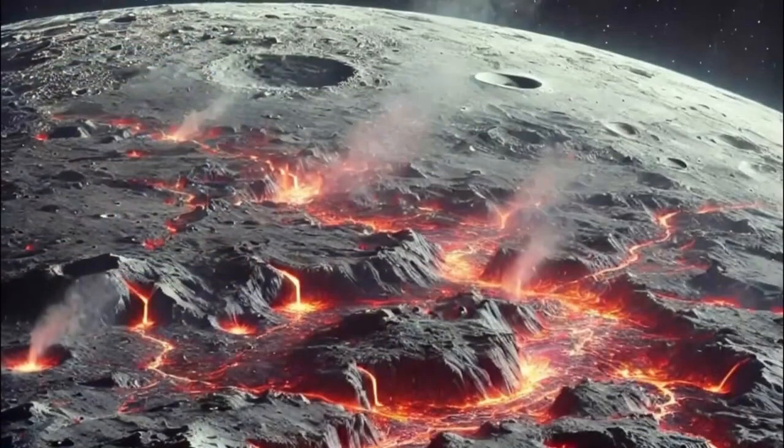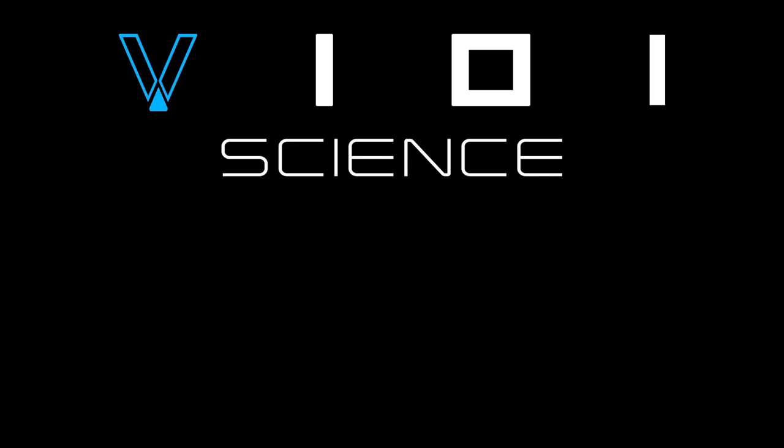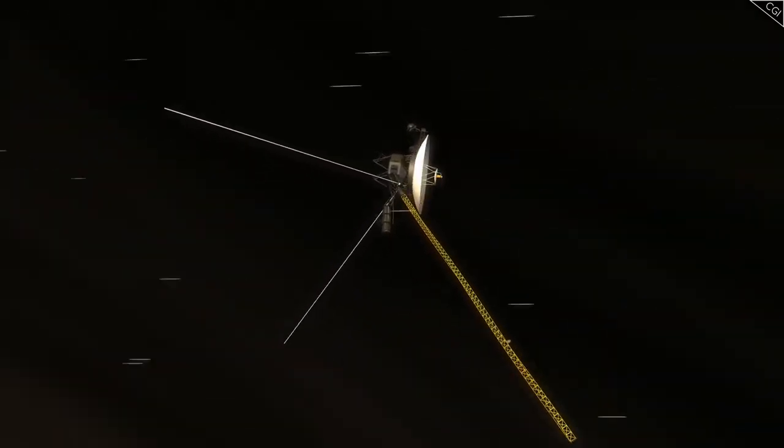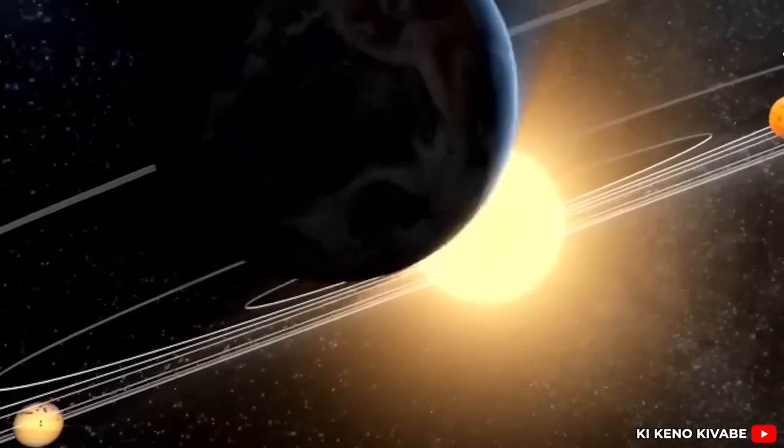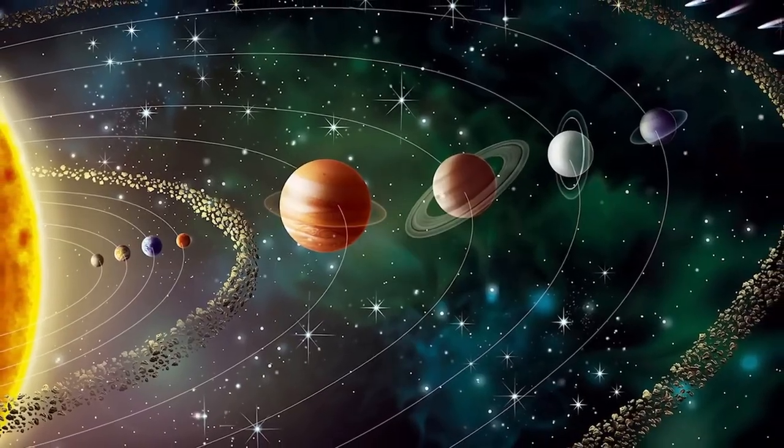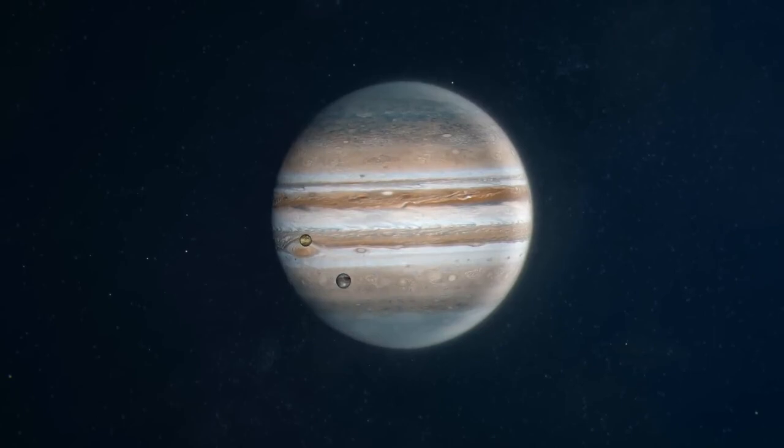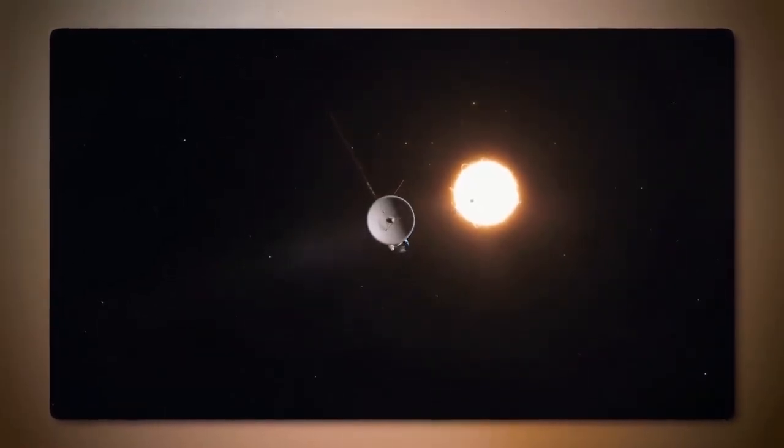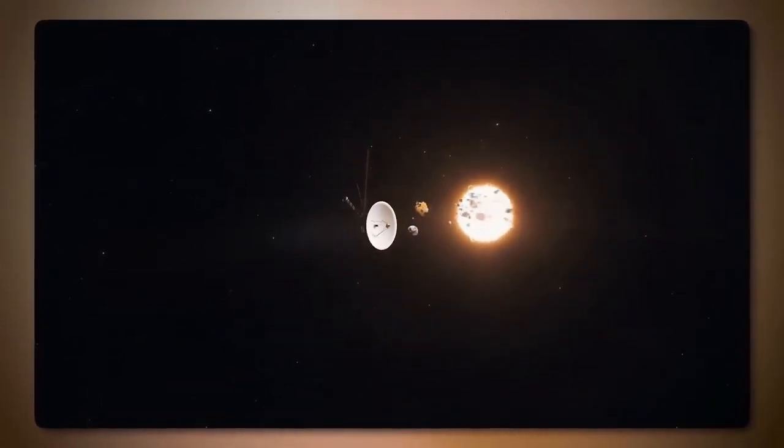Voyager 1's revival of a 43-year-old transmitter is another stunning display of engineering foresight. NASA's Voyager 1 spacecraft recently communicated using a backup radio transmitter that had been dormant since 1981. This milestone highlights the ingenuity and resilience of the spacecraft, which is now over 15 billion miles from Earth. In October 2024, Voyager 1 experienced a communication anomaly when it unexpectedly ceased sending data via its primary X-band transmitter. Engineers detected a faint signal from the spacecraft using the backup S-band transmitter, which had not been in use for 43 years.